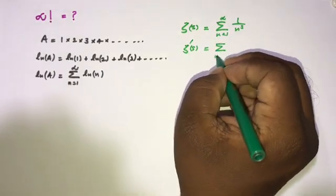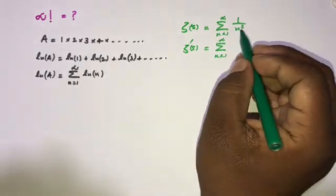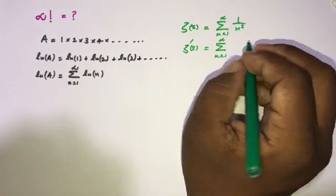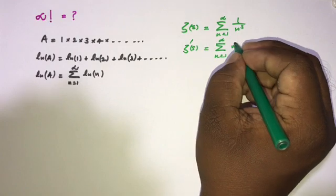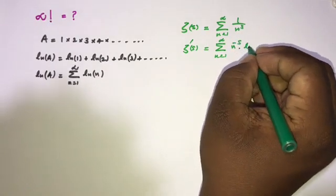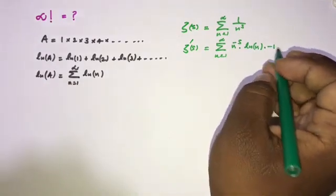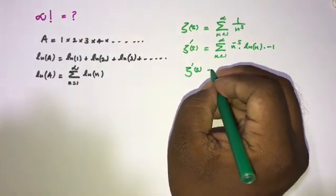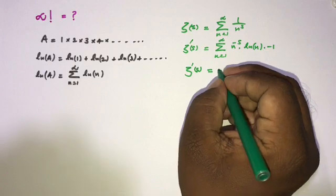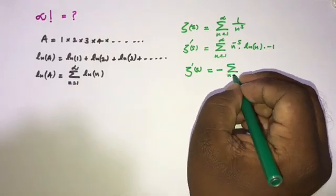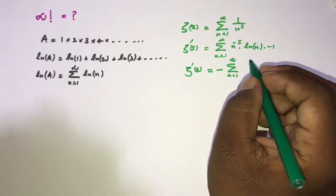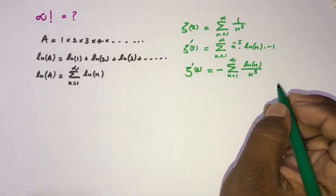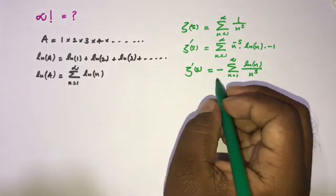The sum is from n equals 1 to infinity. We can write n to the minus s power in the numerator, so differentiating gives us negative n to the minus s times natural log of n. Therefore, zeta dash of s equals minus the infinite sum from 1 to infinity of natural log of n over n to the s power.